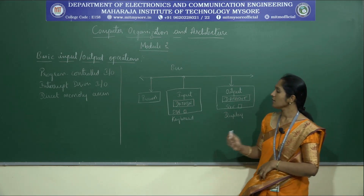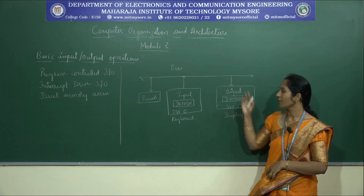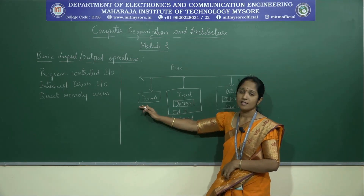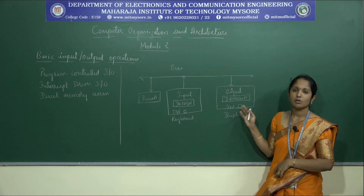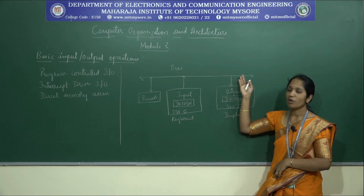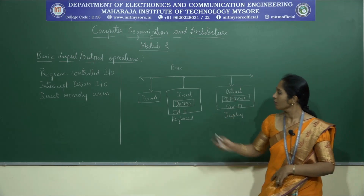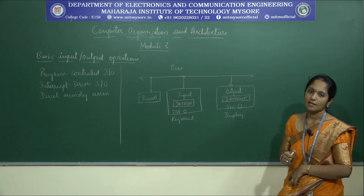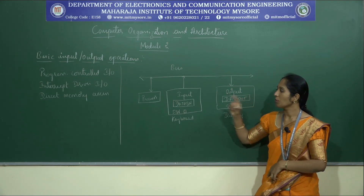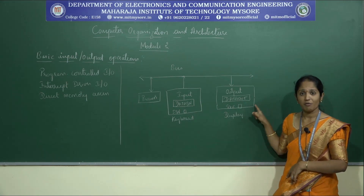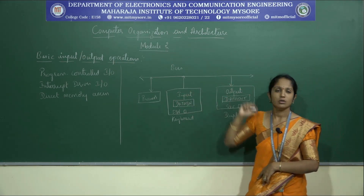Let us discuss how the processor communicates between input, output, and memory. The processor executes millions of instructions per second, whereas through a keyboard we can give tens of characters per second. The output speed depends on the bus interconnect and the number of lines on the bus. Data-in, data-out are buffer registers; SIN and SOUT are status flags. All these are present in a circuitry called the device interface, which is connected to the processor through the bus. Interfacing circuitry is present for all peripherals connected to the processor.